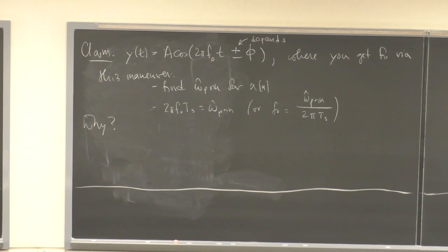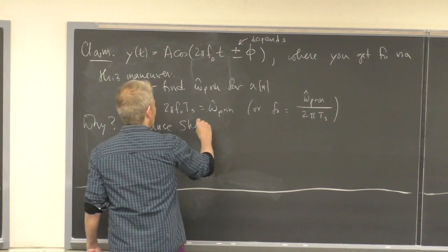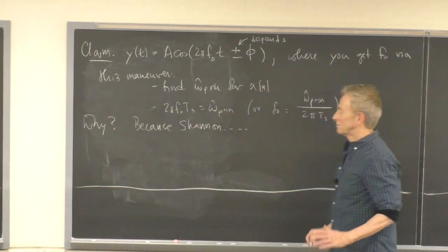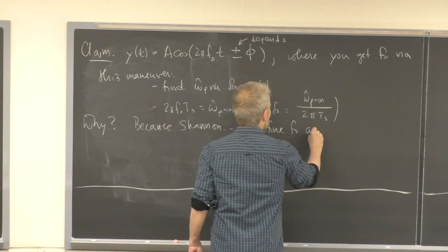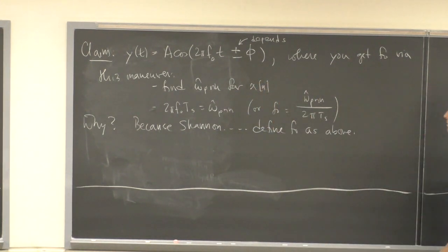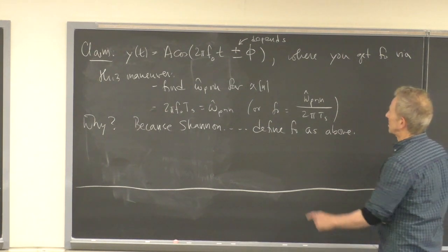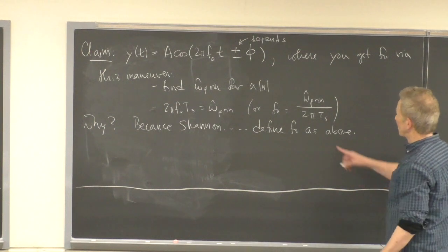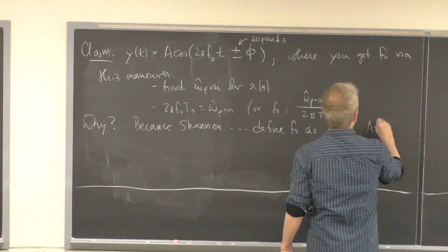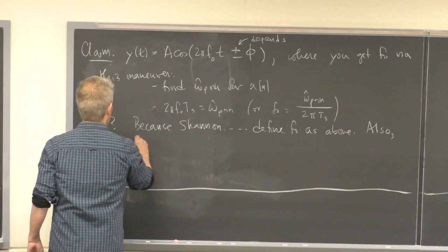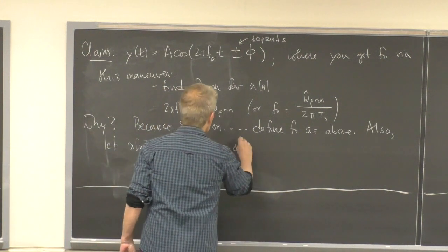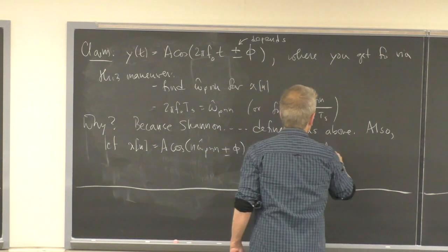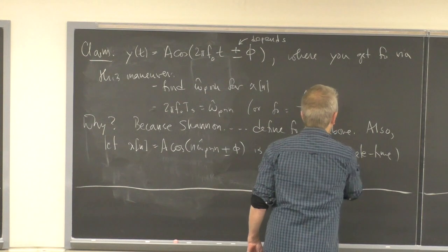Why is this true? It's because of Shannon. Let's define f₀ this way: suppose the principal discrete time alias of x[n] is A·cos(n·ω_hat_prin ± φ). This is the principal discrete time alias — the same signal as x[n], just written differently — where ω_hat_prin lies between −π and π, or equivalently between 0 and π.